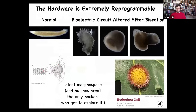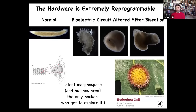In morphospace there are lots of attractors, normally occupied by these particular species, but this hardware has no problem going there if the electrical state says so. They will visit these attractors and you can get a different species' anatomy from the same cells. In fact, you can go further and really explore the latent morphospace — you can make planaria that don't look like worms at all: they can have a different type of symmetry, they can be hybrid forms, they can be these crazy spiking things — all with genetically normal cells.